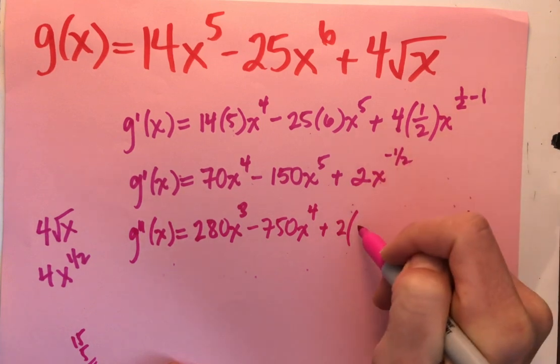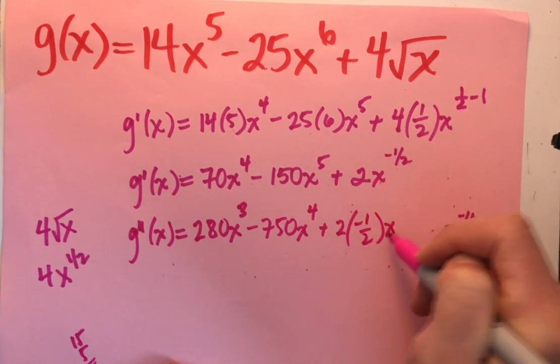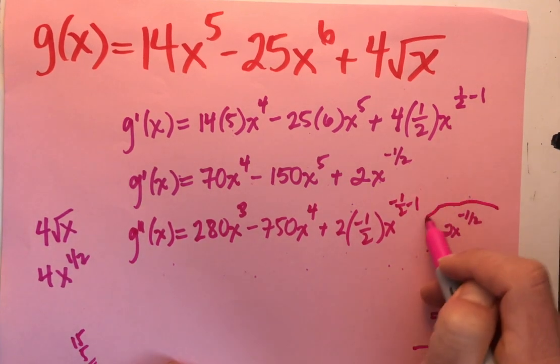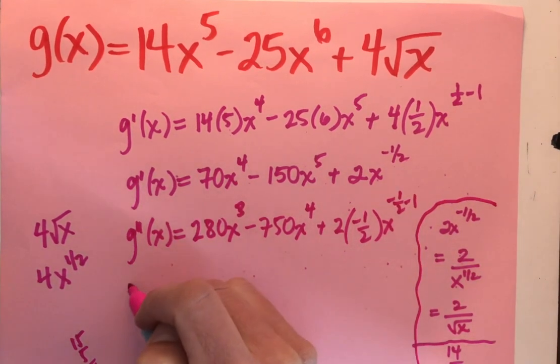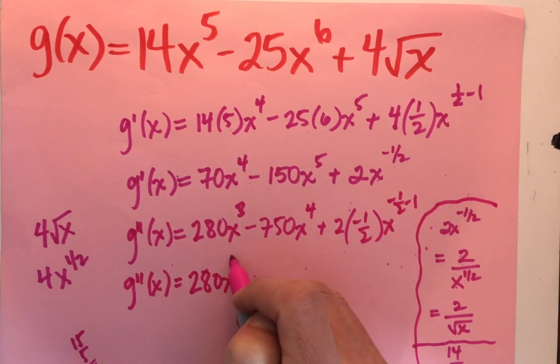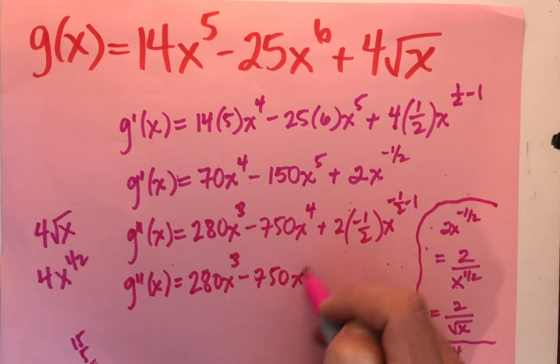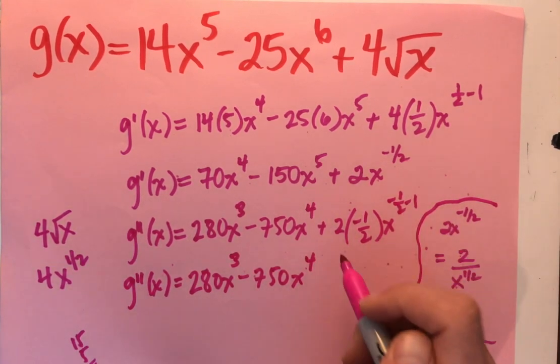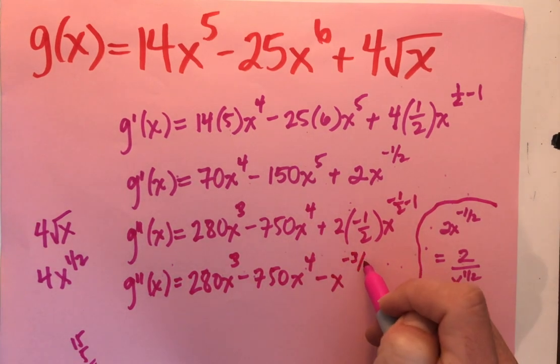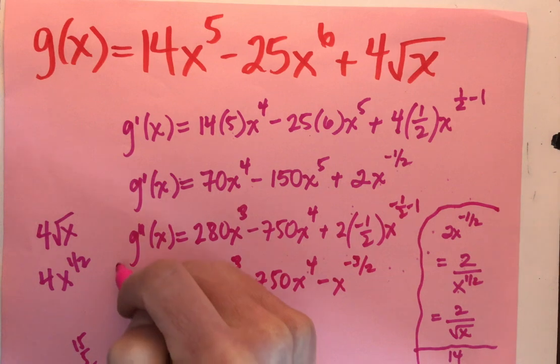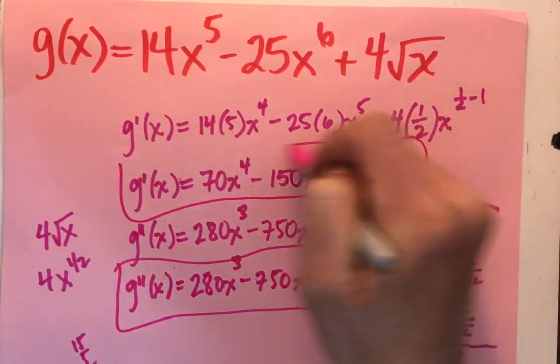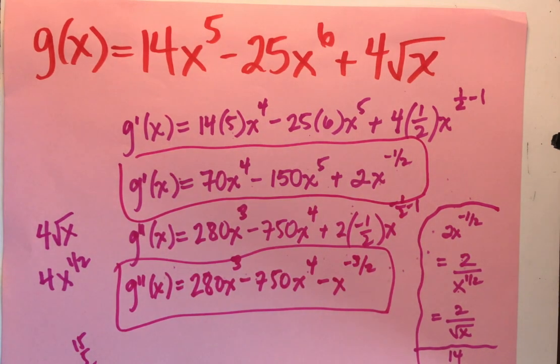2 times, I'm going to bring that negative 1 half down, x to the negative 1 half minus 1, and now we're getting a lot of crazy space here. g double prime of x, 280 x cubed minus 750 x to the 4th. 2 times the negative 1 half is going to be a negative 1. x to the negative 3 halves. Boom. And a boom. Let's sit with that for a second.